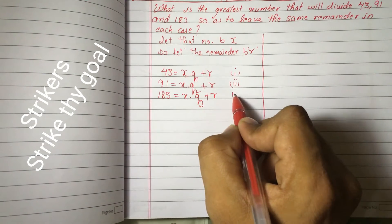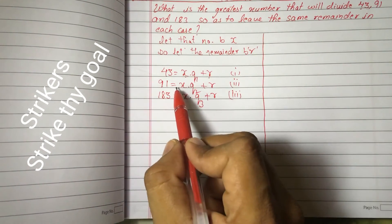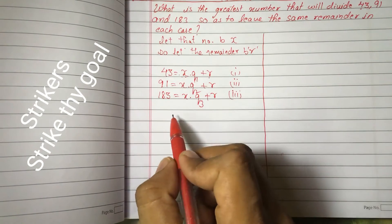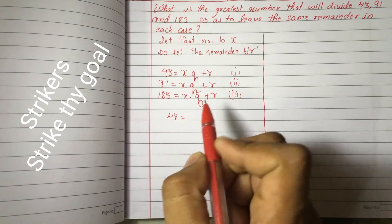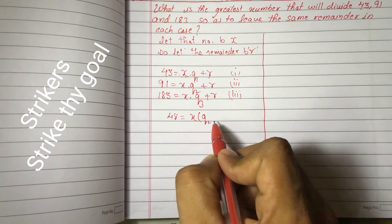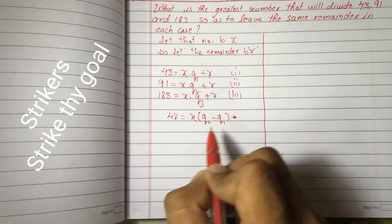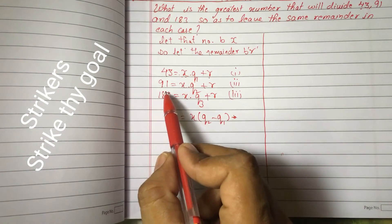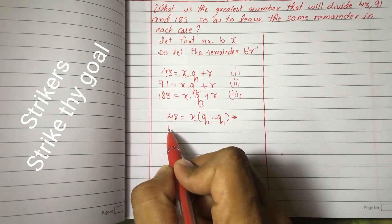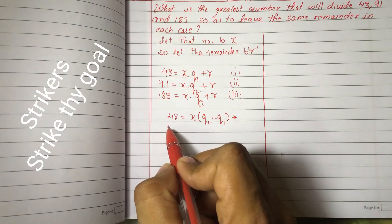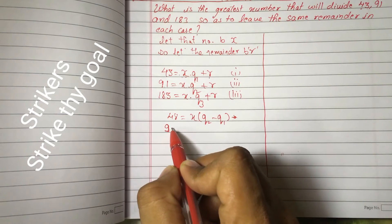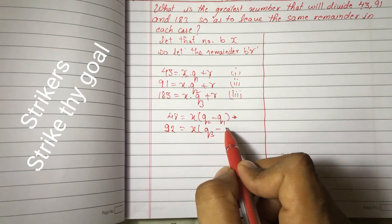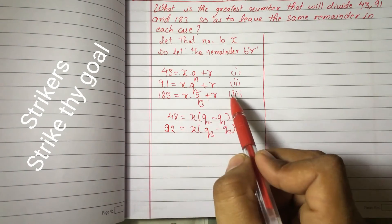Now, subtracting Equation 1 from Equation 2, you get 48 = X × (Q2 − Q1), and R cancels out. Similarly, subtracting Equation 2 from Equation 3 you get 92 = X × (Q3 − Q2).